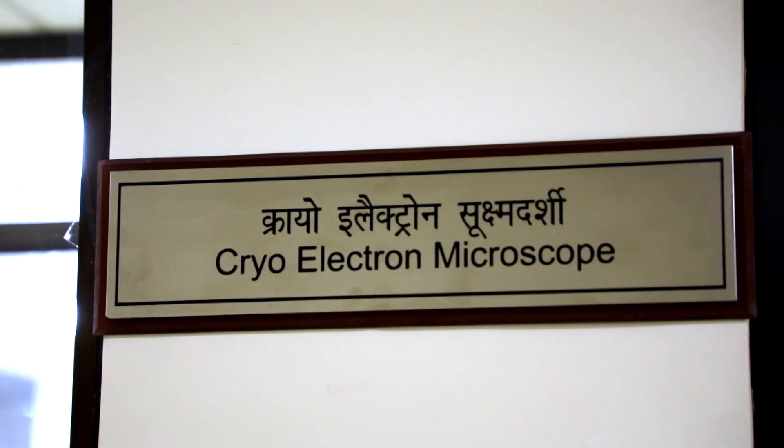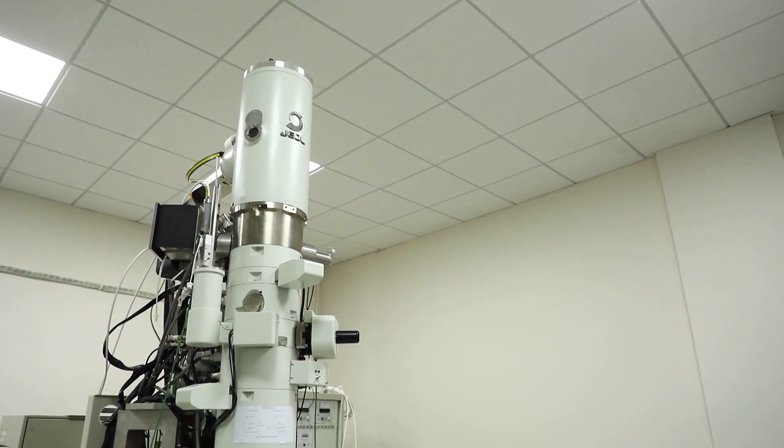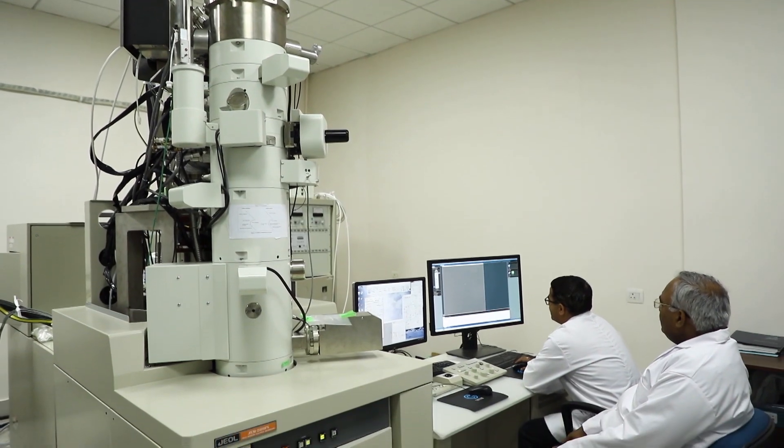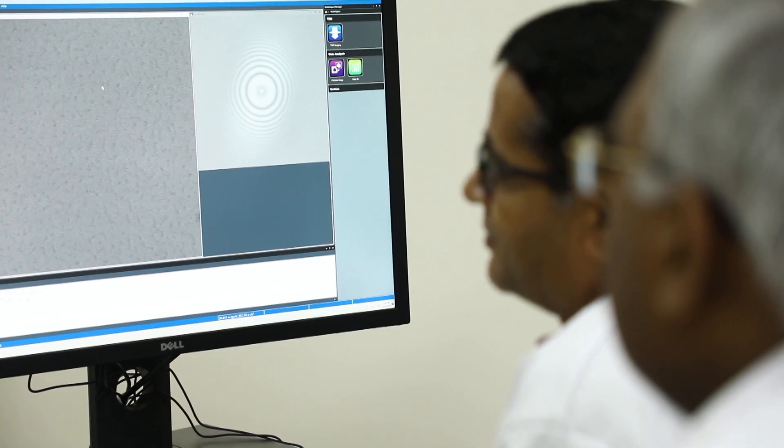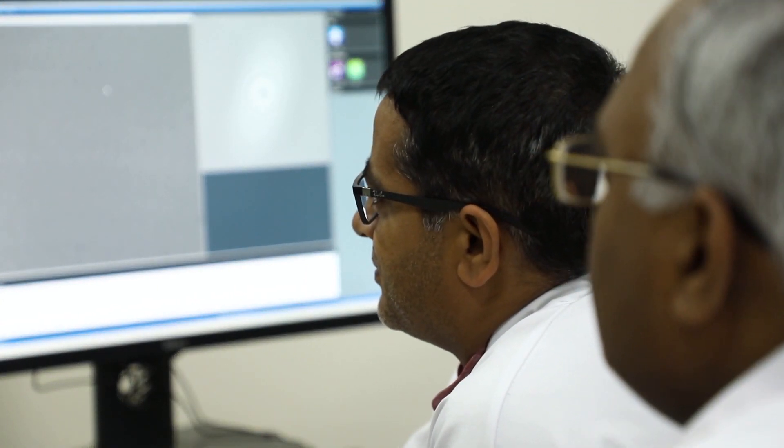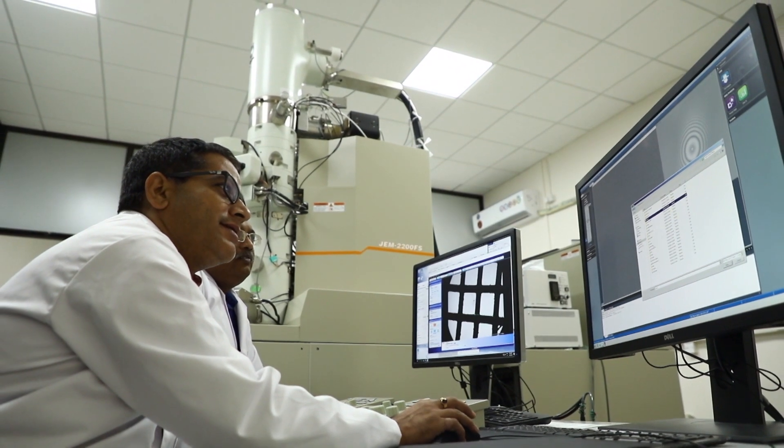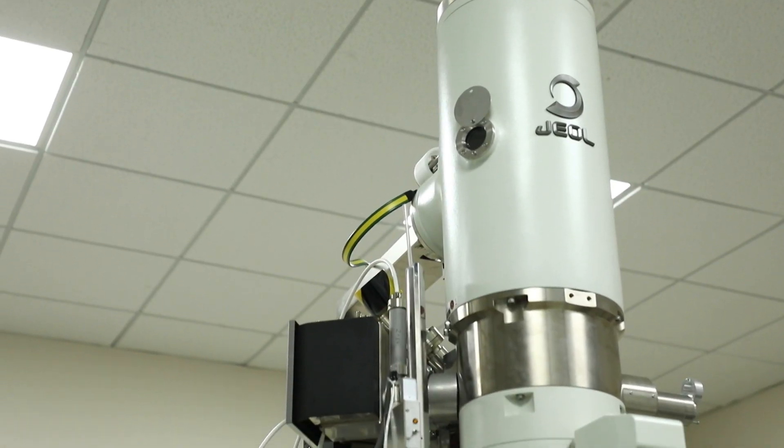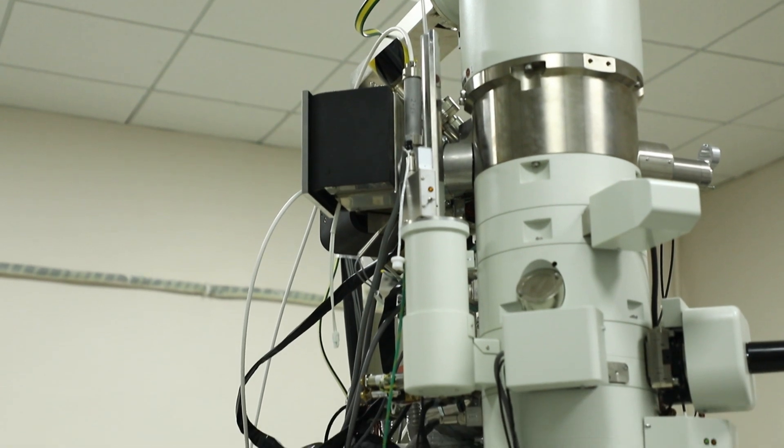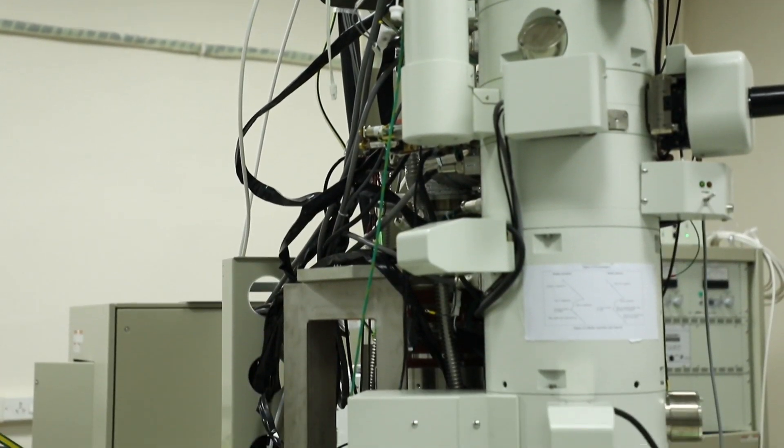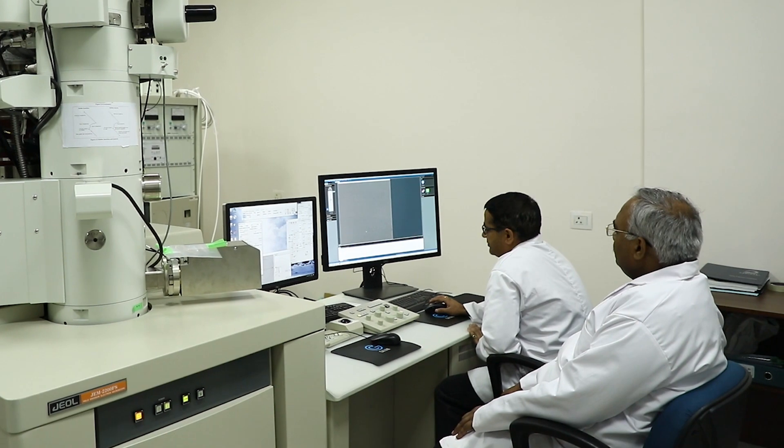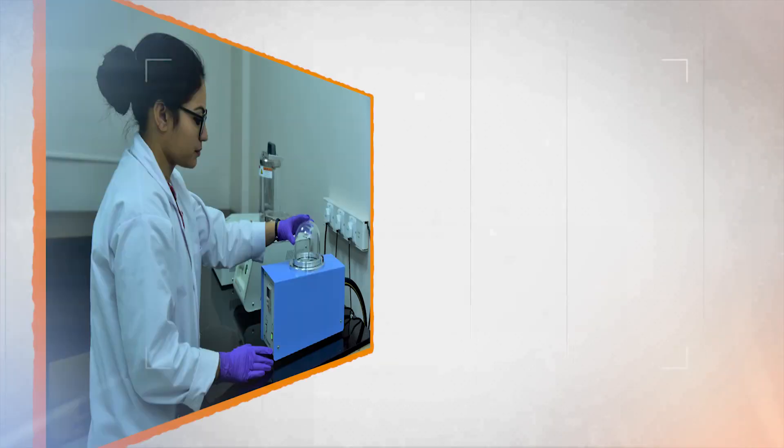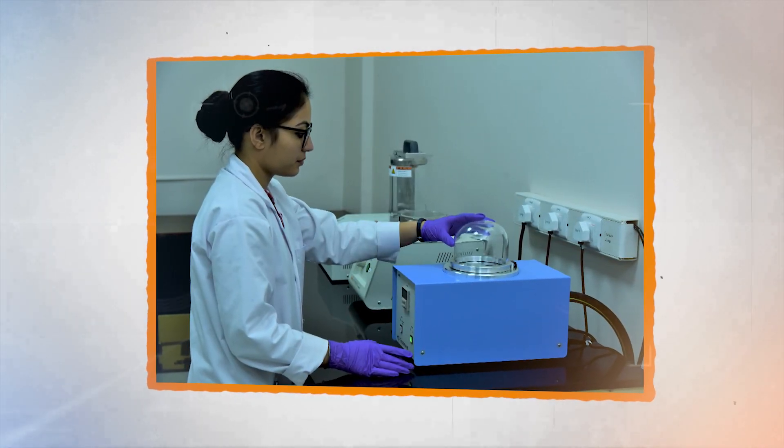Last but not the least is Cryo-Electron Microscopy. Recent path-breaking advances have allowed the use of Cryo-Electron Microscopy to obtain the structure of macromolecules. In Cryo-Electron Microscopy, samples are imaged in its native condition at cryogenic temperature. Due to recent developments in detector technology and image processing algorithm.